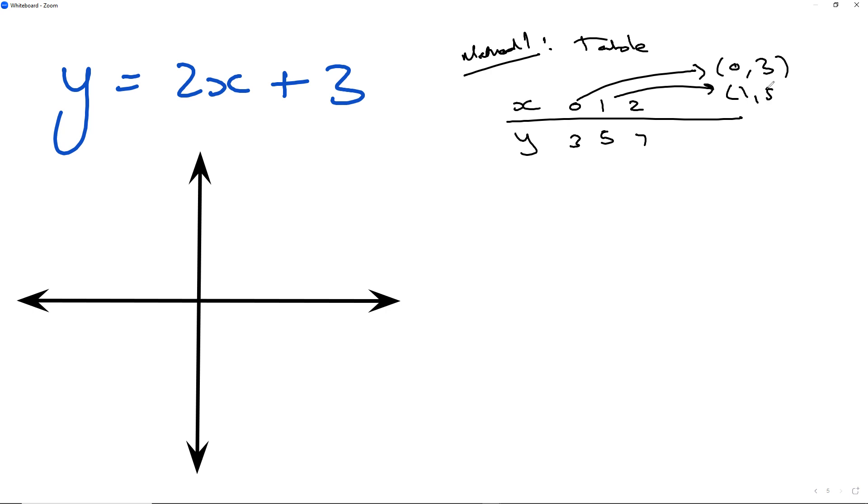This would be 0, 3. This would be 1 and 5. This would be 2 and 7. Remember when you're plotting coordinates we always plot x first and then y. For example, this would be x equals 0, y equals 3, so 1, 2, 3 which would be here. For this one here would be 1 and 5, so 1 over here, 4, 5 over here.